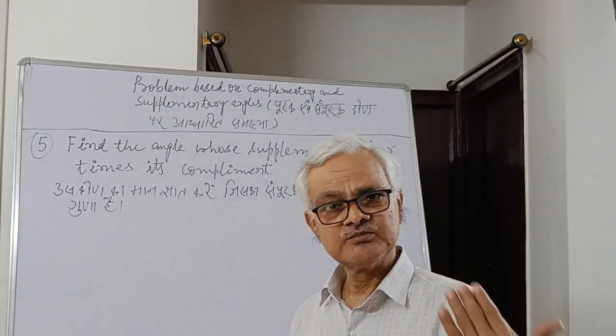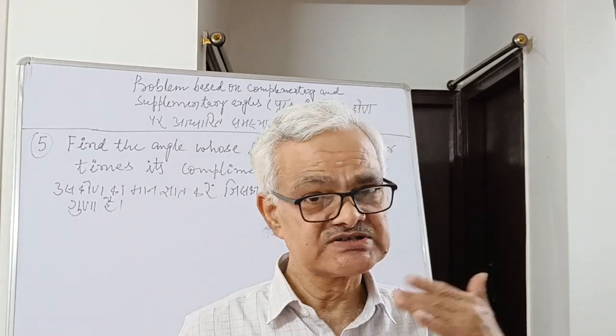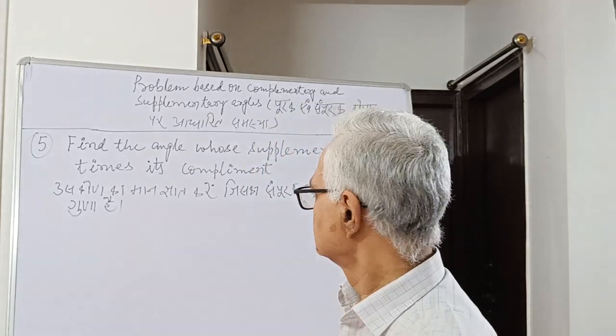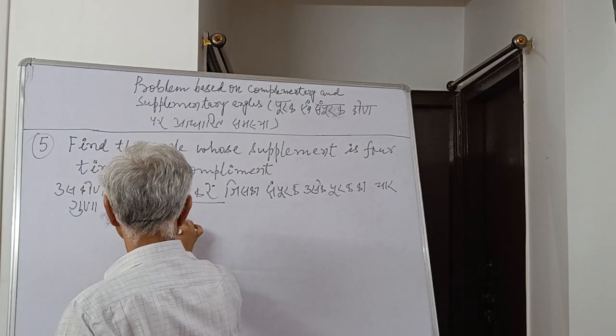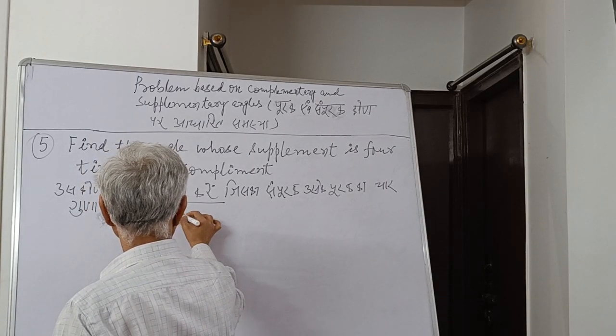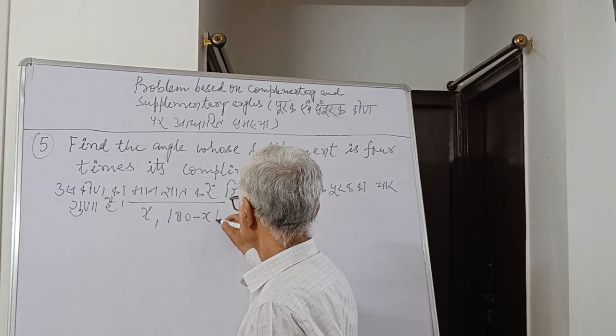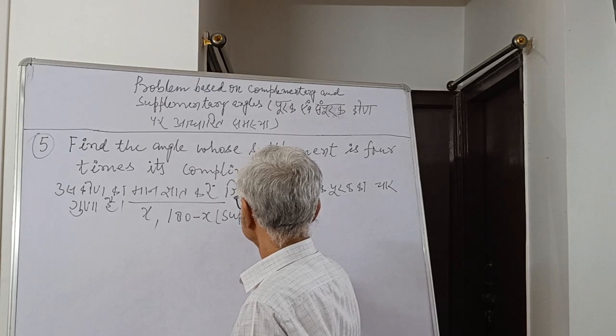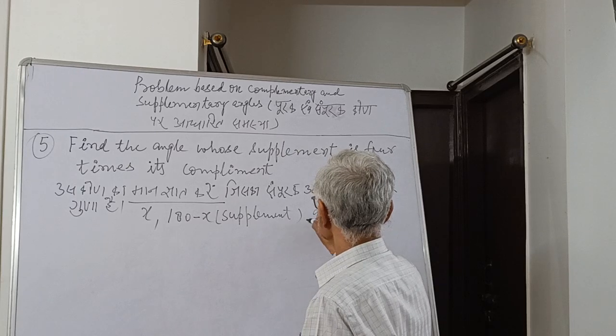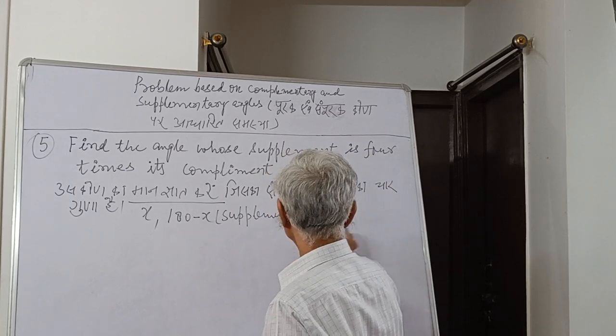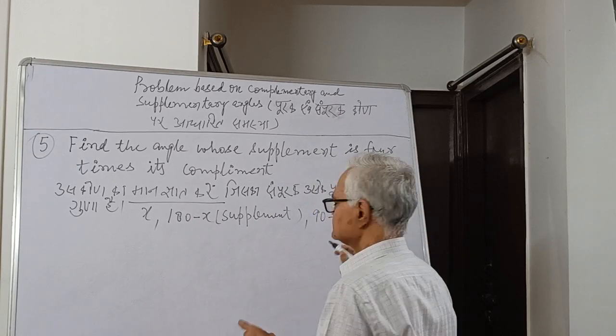If x is the number, what is the complement? What is the supplement? If x is the angle, then 180 - x is the supplement, and 90 - x is the complement. That's clear.